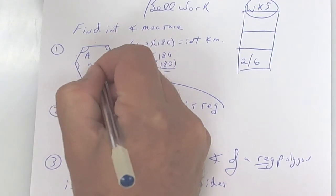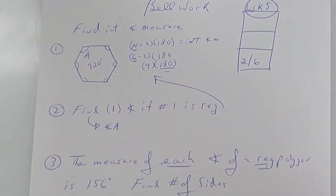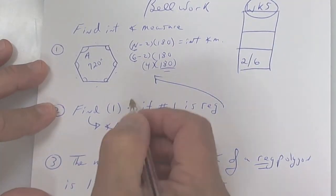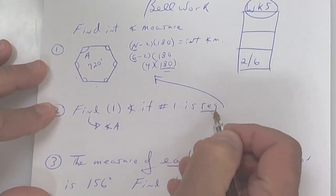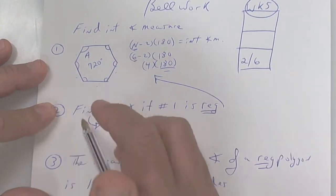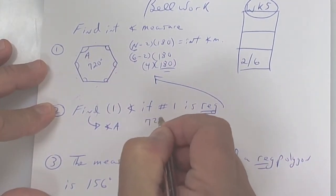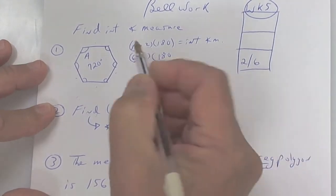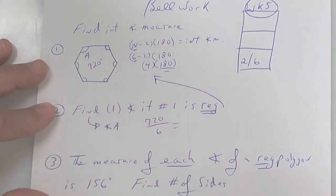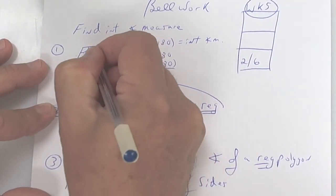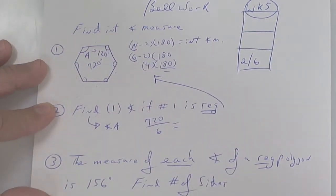Number two asks: what is the measure of one of those angles? Well, if it's a regular polygon, all angles are the same, so you take 720 and divide by 6, because there are 1, 2, 3, 4, 5, 6 angles. That gives you 120 degrees. So angle A — and in fact all of those angles — would be 120 degrees.